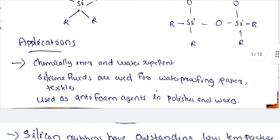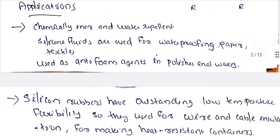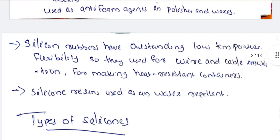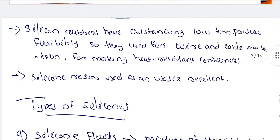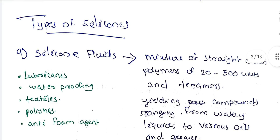The applications of silicones: they are chemically inert and water repellent. Silicon fluids are used for waterproofing paper and textiles, and used as an anti-foam agent in polishers and waxes. Silicon rubbers have outstanding low-temperature flexibility and are used for wire and cable insulation and for making heat-resistant containers. Silicon resins are used as water repellents.